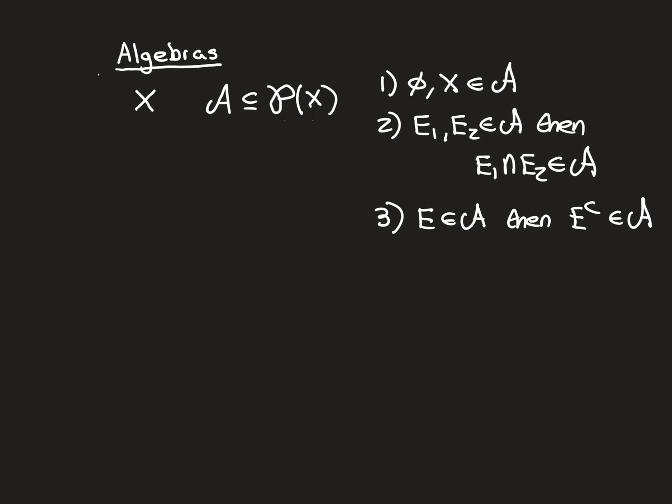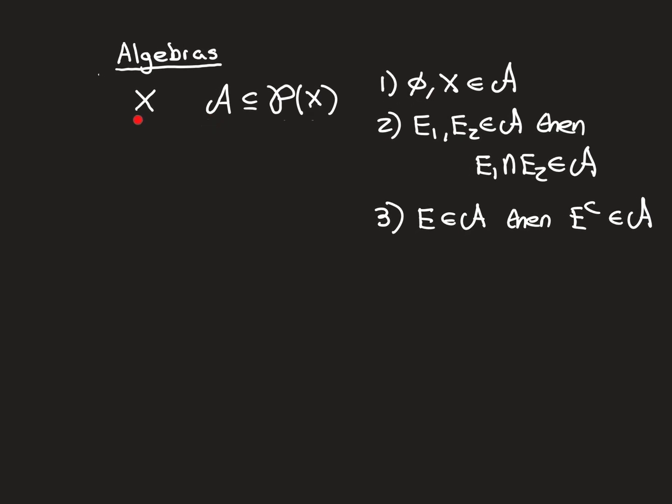These are the three properties, and if they hold true for your class of subsets of x — or another word we need to get used to in measure theory: family of subsets — then that family of subsets deserves to be called an algebra. Now, what I want to explain here is that with properties two and three together, you can deduce that the algebra is closed under finite unions as well.